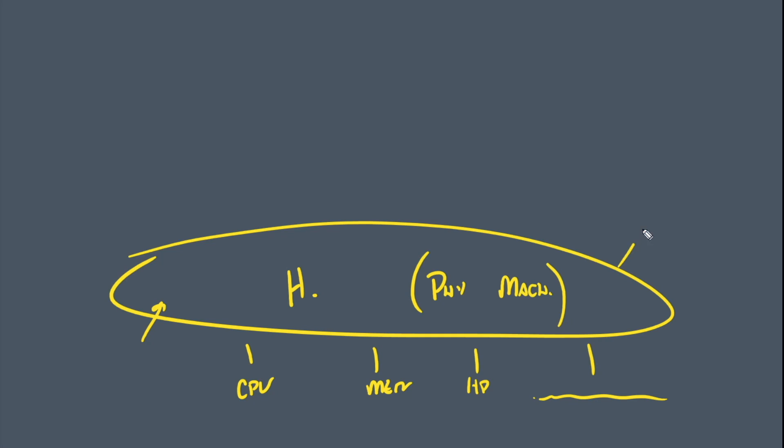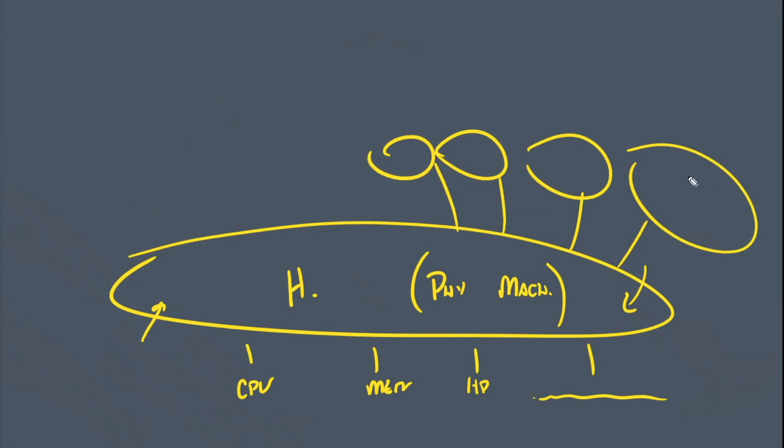And you use those resources to create virtual machines. This gives us way better utilization of our hardware than we used to have back in the old days where there was essentially one server equals one server. Now we can do more than that. That's what VMs are.